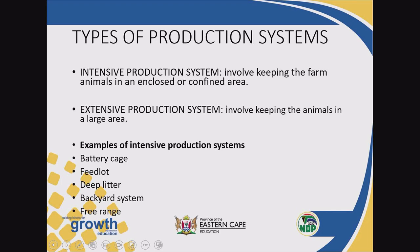In animal production, we have two types. Learners have to take note of the term production system. The production system is divided into intensive production system and extensive production system. I will firstly talk about intensive production system.